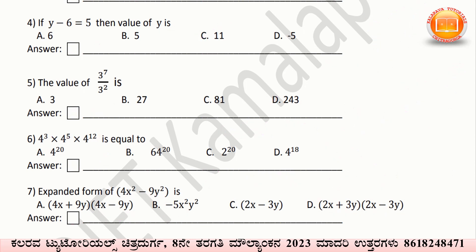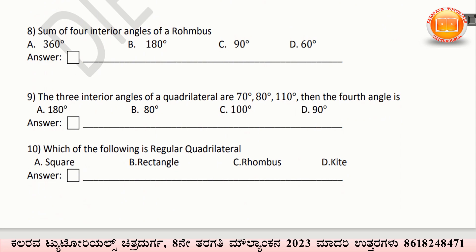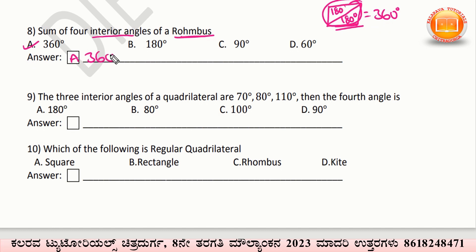Now the 8th question: sum of the 4 interior angles of the rhombus. In any quadrilateral, if you divide it, it forms 2 triangles. The sum of interior angles of one triangle is 180°, and another is 180°. So the total sum equals 360°. The interior angles of any quadrilateral equal 360°. Rhombus is also a quadrilateral, so option A — 360° — is the correct answer.